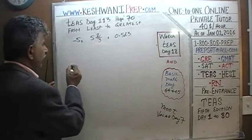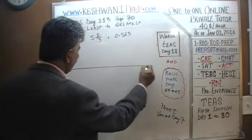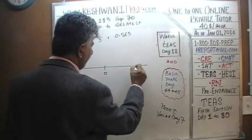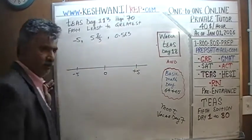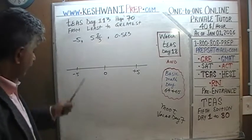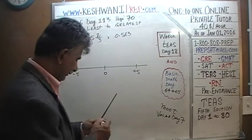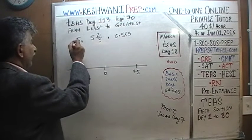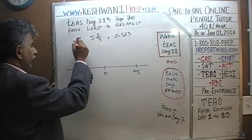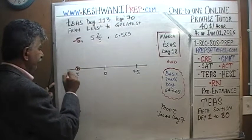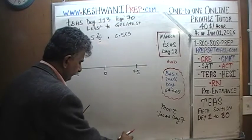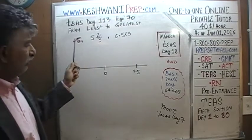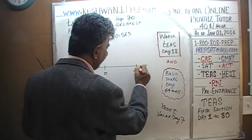Arrange them on a number line — it will be quick, over and done with. Here is zero, here is a negative 5, here is a positive 5. The first number given to us is negative 5 exactly, right here. The next number is 5 and 2 thirds. That's positive 5 — we mean 5 and 2 thirds — so it's going to be a little bit bigger than 5, right here.